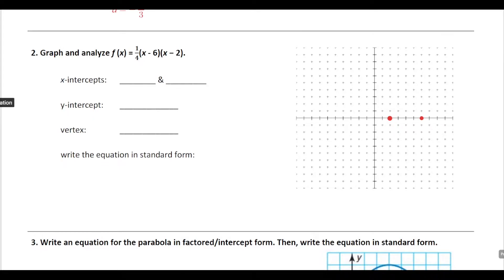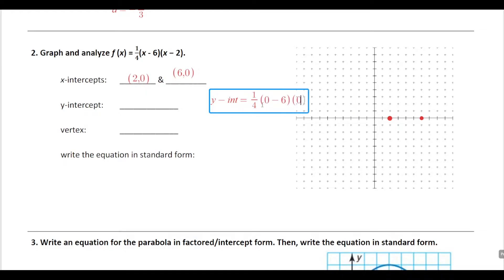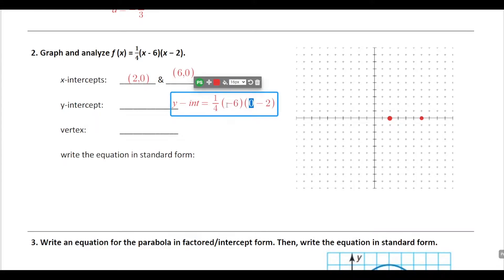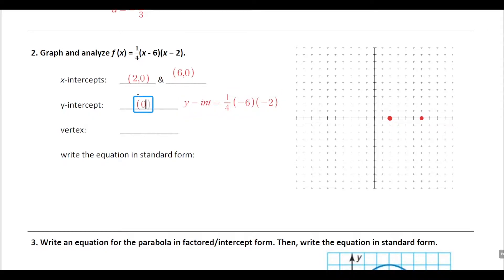Let's answer the questions we know so far. The x-intercepts are going to be at (2, 0) and (6, 0). To get the y-intercept, we substitute 0 in for x and evaluate. So the y-intercept: one-fourth times (0 minus 6) times (0 minus 2). Whenever you do 0 minus something, it's just the negative version of that number. So 0 minus 6 is negative 6, and 0 minus 2 is negative 2. 6 times 2 is 12, and 12 divided by 4 is 3. So our y-intercept is at (0, 3), and we can go plot that point.